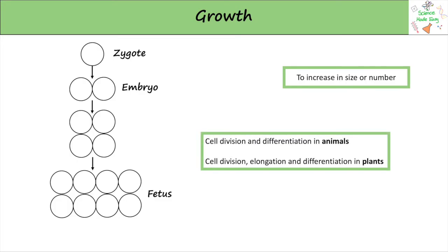Animal cells only divide. However, the main way plants grow is by elongation, though they still divide in some areas — for example, at the roots.